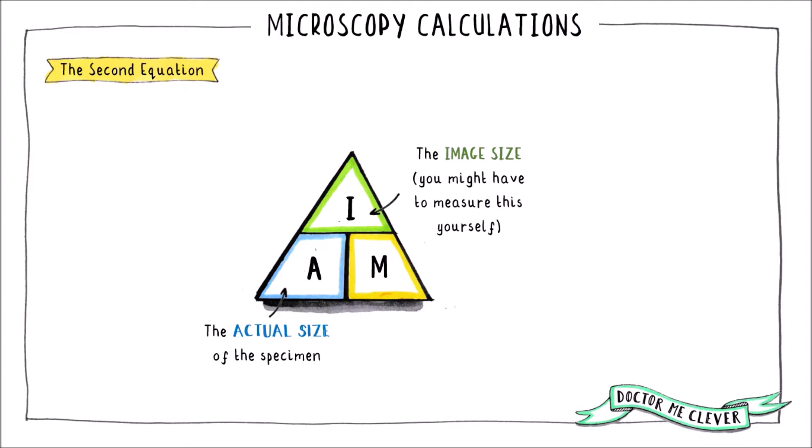A stands for the actual size of the specimen. It is sometimes referred to as the real size of the specimen. This is always a smaller value than the image size and the units for A will most likely be given in micrometres or millimetres.